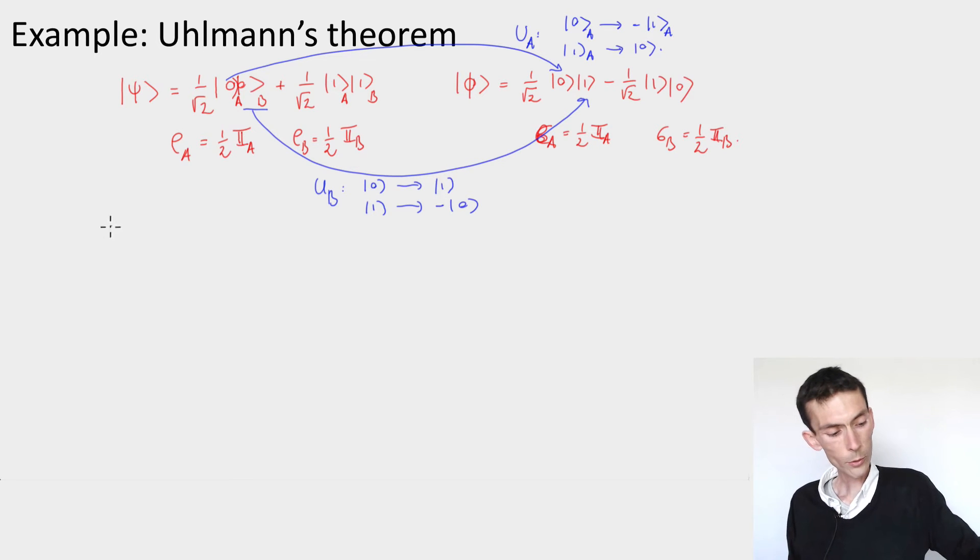So if you look at what happens by applying UA tensored identity psi, you get phi. And you also get it by acting only on system B alone.